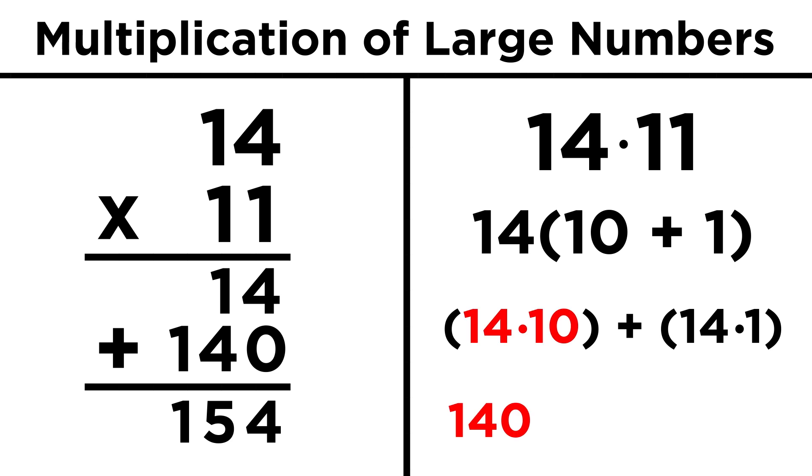When multiplying by ten, we just add a zero, so one hundred forty, and multiplying by one means the number stays the same, so we have one hundred forty plus fourteen, or one hundred fifty-four.